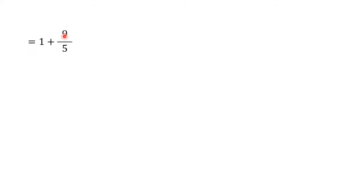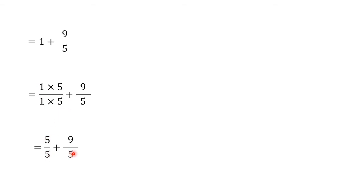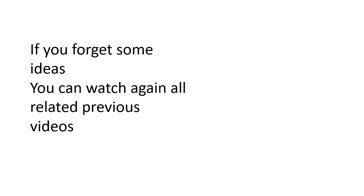Now we have 1 plus 9 over 5. To add I put 1 over 1 and multiply by 5, giving 5 over 5 plus 9 over 5. With the same denominator I add the numerators: 14 over 5. If you need more explanation on adding, subtracting, dividing, or multiplying fractions, or the general idea of complex fractions, please revise the previous videos.